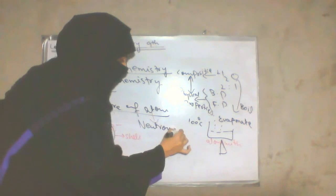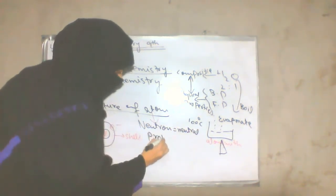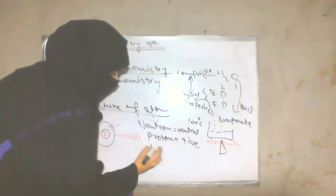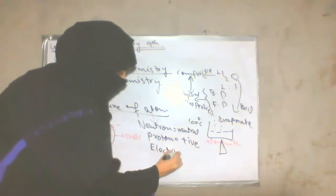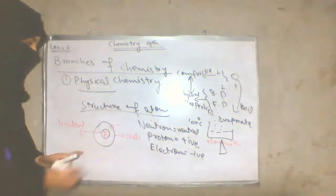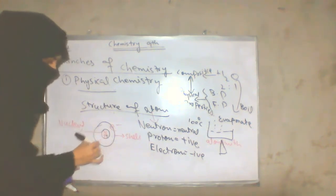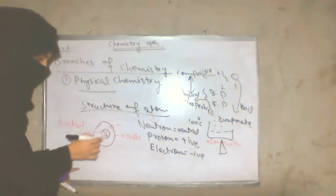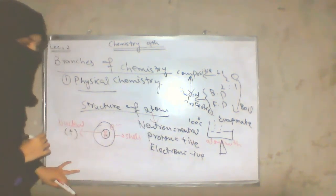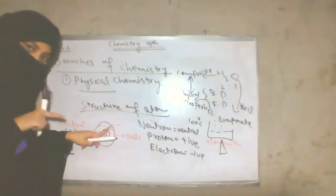In the neutron, there is no charge — it is neutral. If you see the proton in the atom, it has a positive charge. If you see the electron in the atom, it has a negative charge. Because there is a proton in the nucleus with positive charge and the neutron has no charge, the nucleus overall is positively charged.